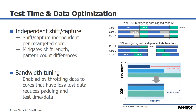SSN also has bandwidth tuning. Rather than shifting as many bits as there are scan channels per packet, bandwidth tuning allocates fewer bits per packet to cores that require less data. For a core that requires fewer patterns, we allocate less data per packet, and that way we're able to tune the bandwidth and optimize test time for the design.